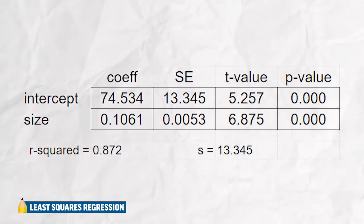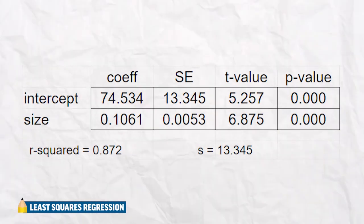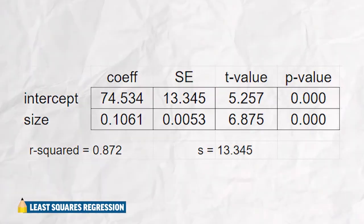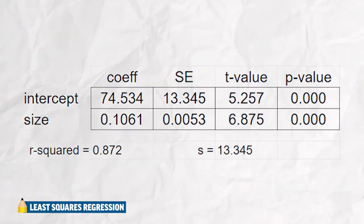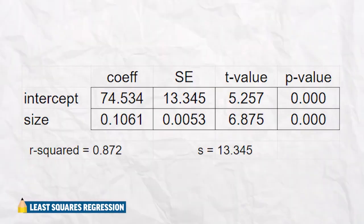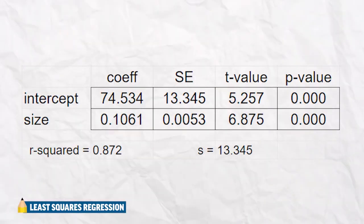We also see some other numbers in this table: SE stands for standard error, and there's a t-stat and a p-value. Those will all be used way later in unit nine, so for right now you can basically ignore all of those values. In a typical problem, you'll be asked to find the slope and interpret it, find the y-intercept and interpret it, tell what r-squared tells you, and tell what S tells you — and you can do all of that with one of these computer output tables.